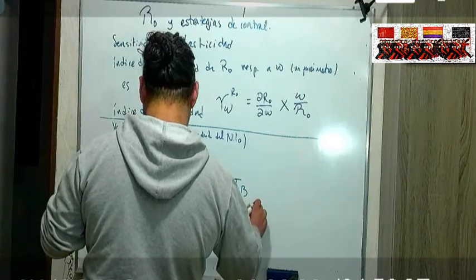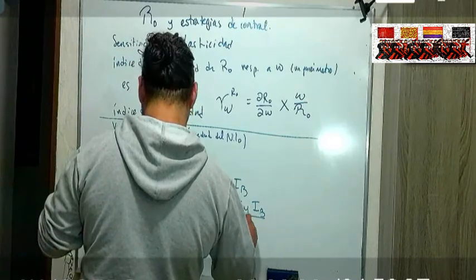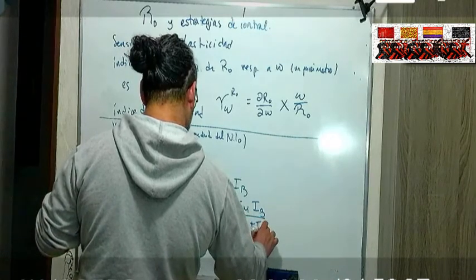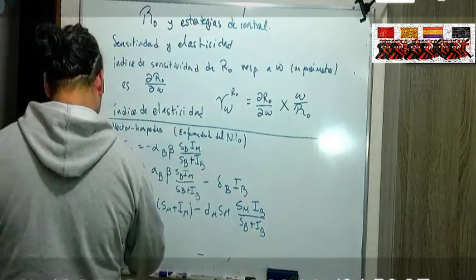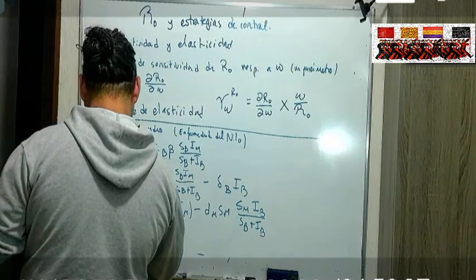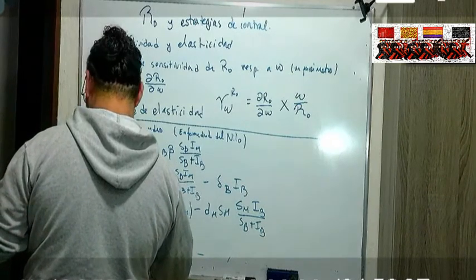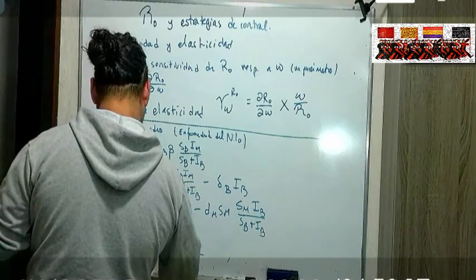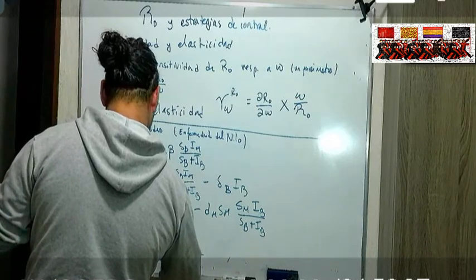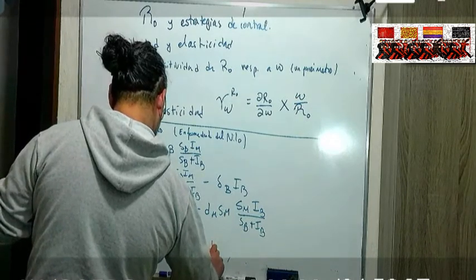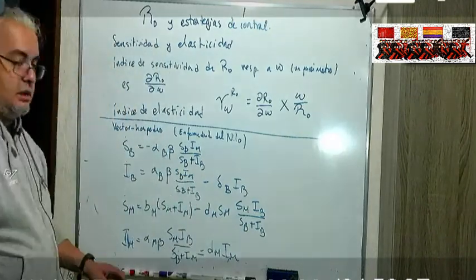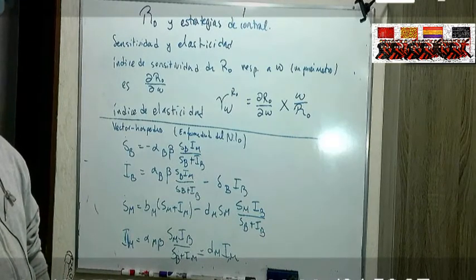Tienen cierta tasa de mortalidad por el virus, esta es la tasa de mortalidad natural, y depende de la tasa de atrición de los mosquitos a las aves, qué tantas aves picotean los mosquitos.